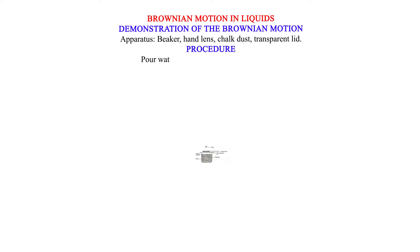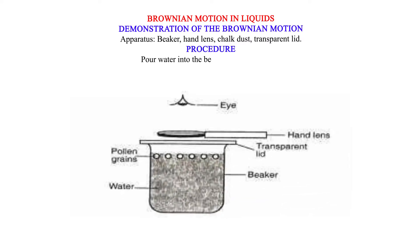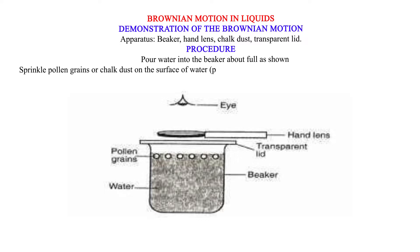Procedure: Pour water into the beaker about full as shown. Sprinkle pollen grains or chalk dust on the surface of water. Particles should be small in size, light, and sprinkled evenly.